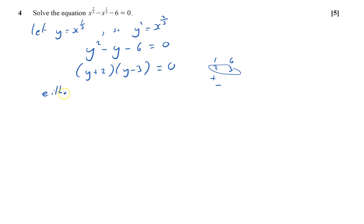Now I've got (y+2)(y-3) = 0, so y plus 2 equals 0 or y minus 3 equals 0. So y equals negative 2 or y equals 3.